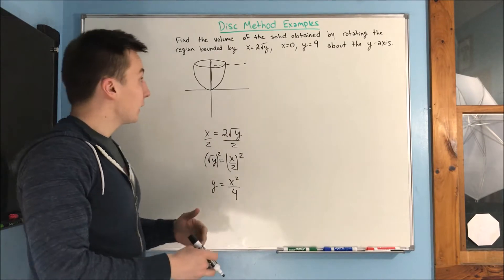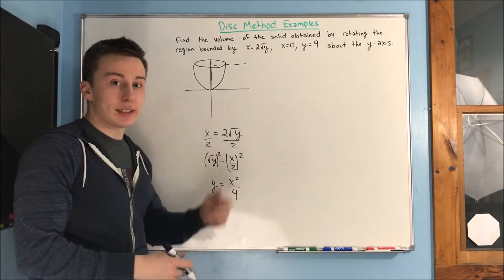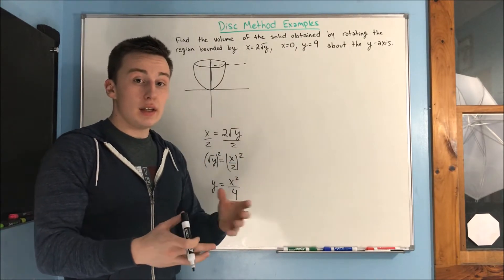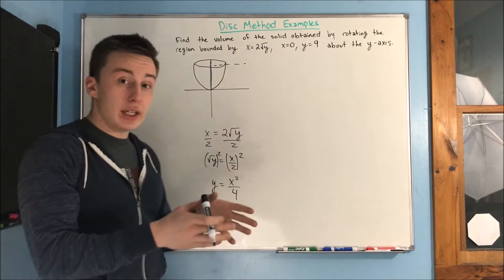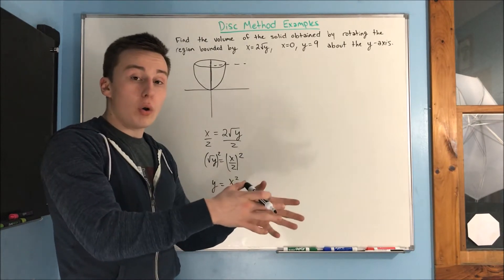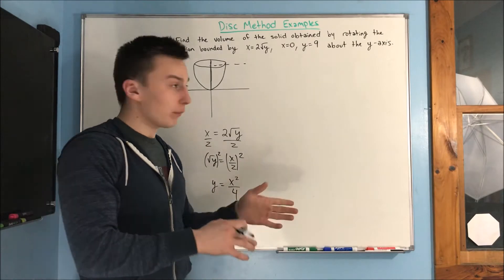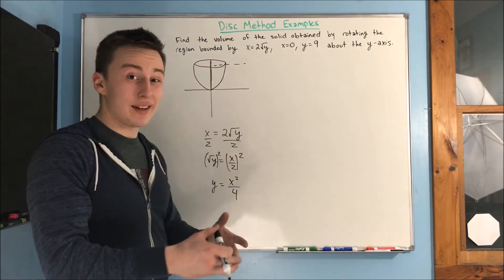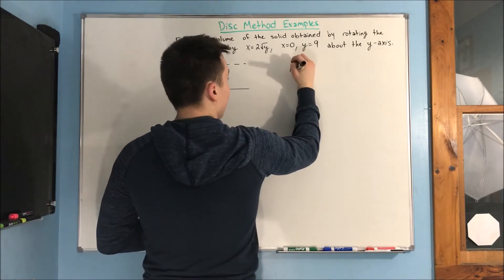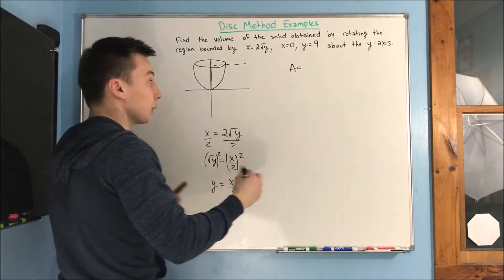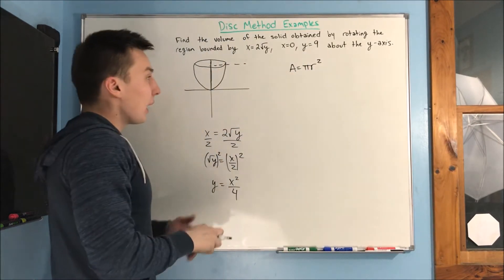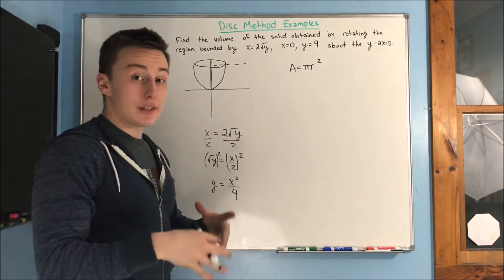What is going to be the area of each cross section? How are we going to find the volume? We are going to find the area of each individual cross section, and then integrate to sum up all of those cross sections along this interval — and that gives us volume. We have circular cross sections, so area equals pi r squared.